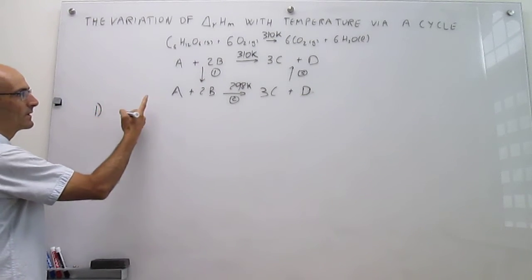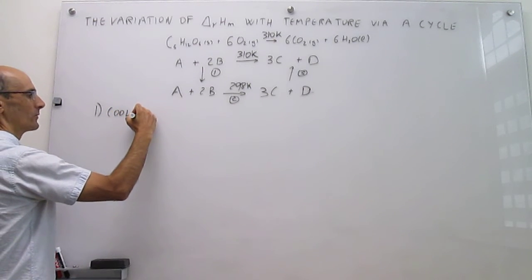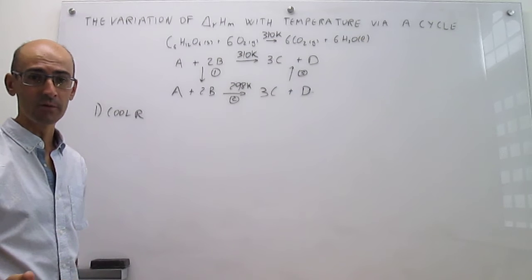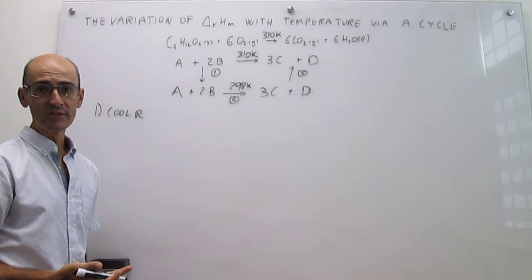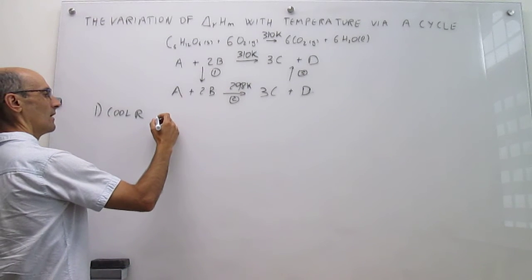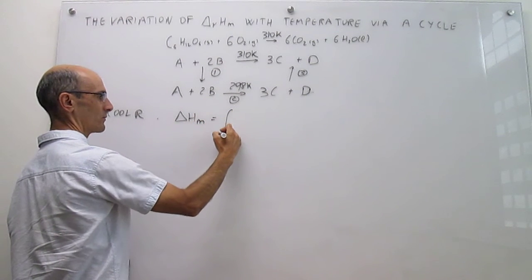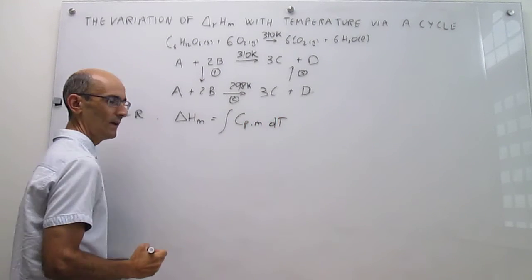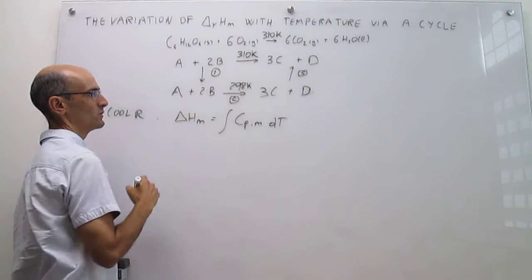The first step is a cooling process for reagents. We know how the enthalpy changes for heating and cooling processes — it is related to heat capacities. This reaction takes place under constant pressure of one bar, and the molar enthalpy of that process is simply the integral of the heat capacity times differential of T, evaluated between T1 = 310 Kelvin and T2 = 298 Kelvin.